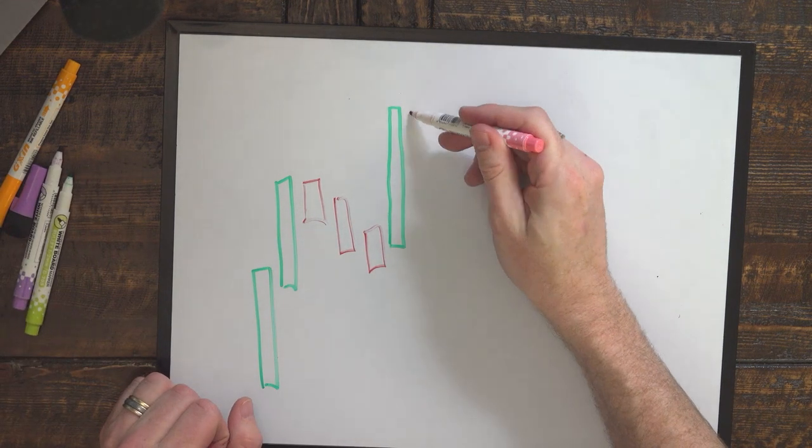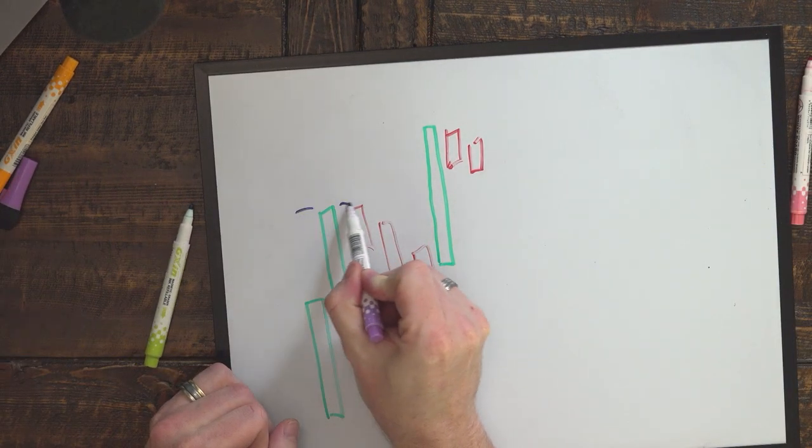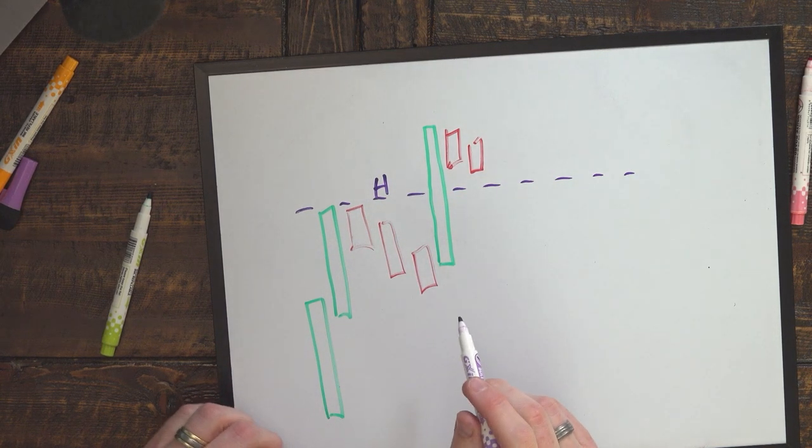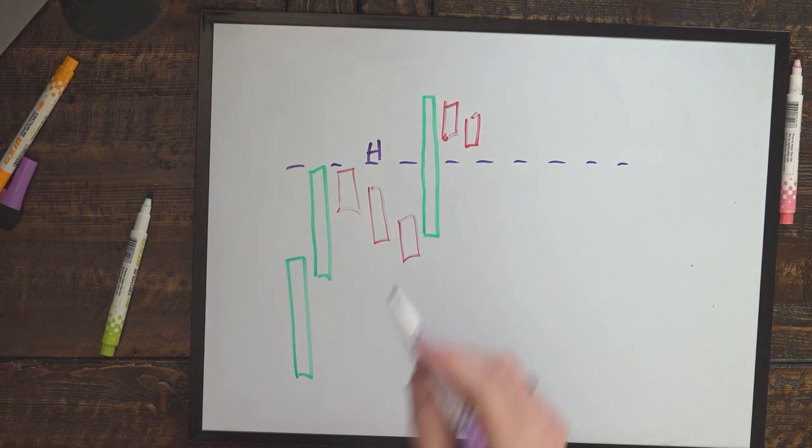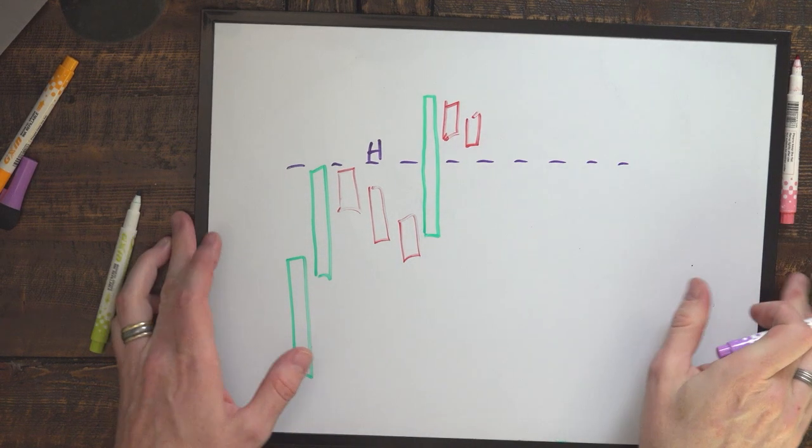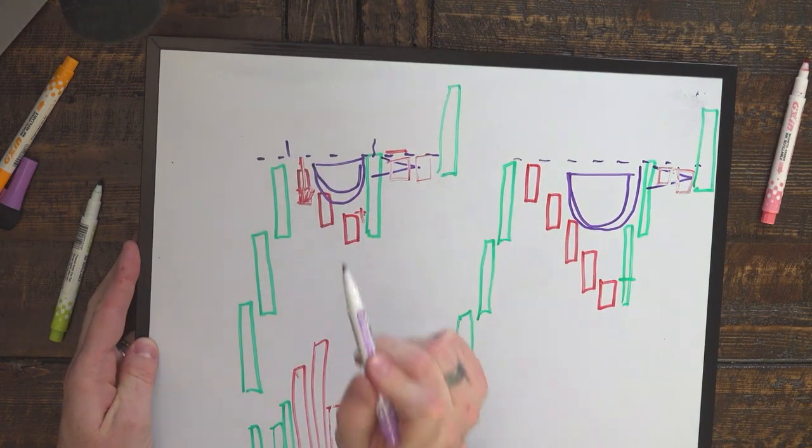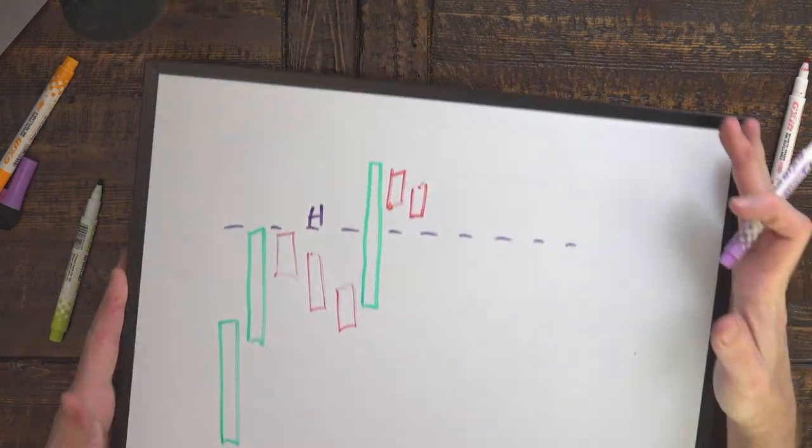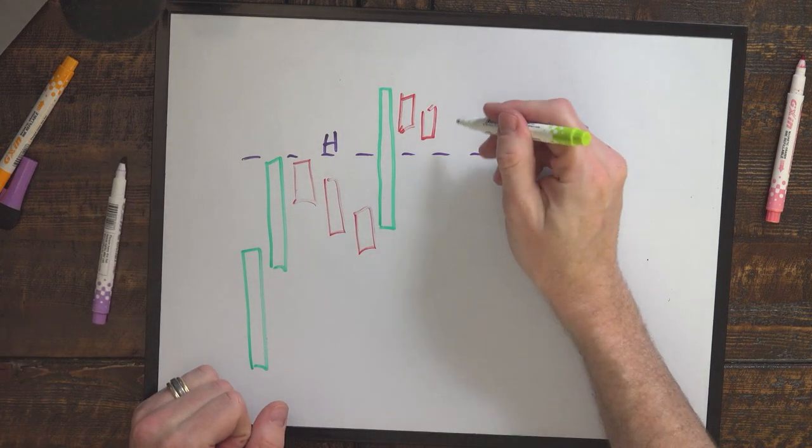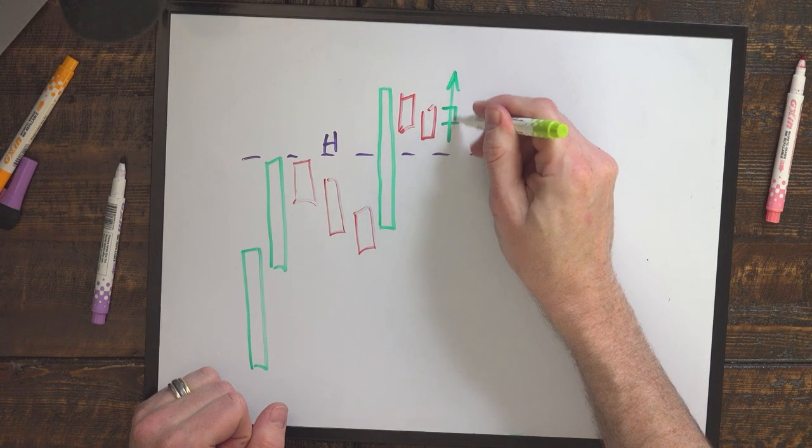Typically what's going to happen is it's going to pull back and retest the previous high or resistance. Now this is not a cup and handle formation because in this example, it broke through this level. The cup and handle happens when you have a double top of resistance, and then you're waiting for it to break for the third attempt. This right here simply broke. And if that's the case, your entry is going to be down here off of support and then buying for the leg back up right here.